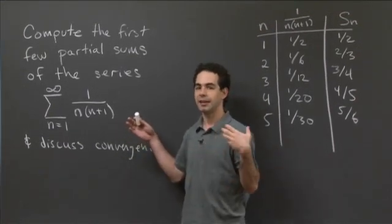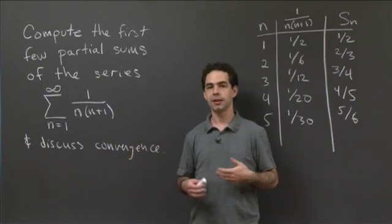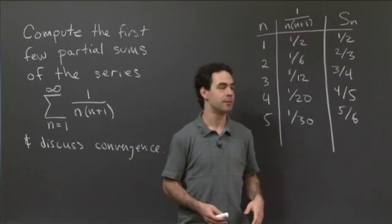And if their limit doesn't exist, then it diverges. If their limit does exist, then the sum of the series is equal to what that value of that limit is.